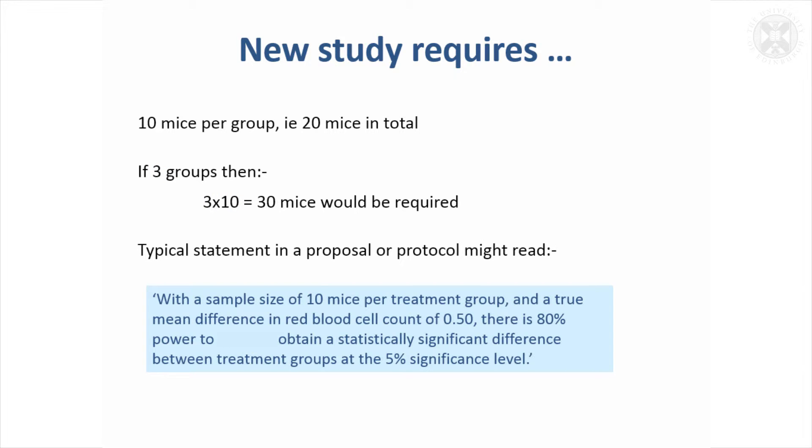It's becoming more common now if you're applying for funding to have to put a statement about how you've done your sample size calculation in your proposal, and as part of the experiment form where you're asked to justify the number of animals you might be using if you're doing an animal study.